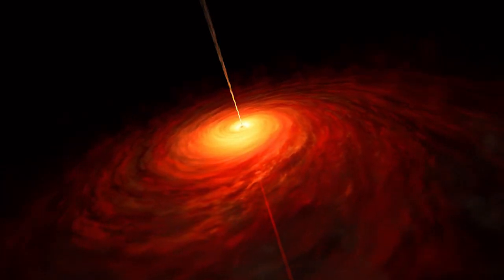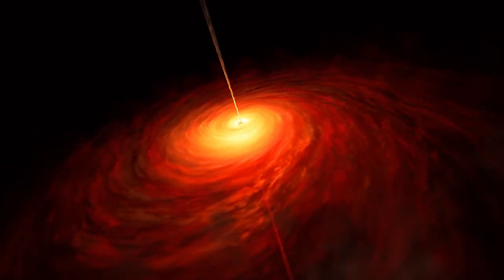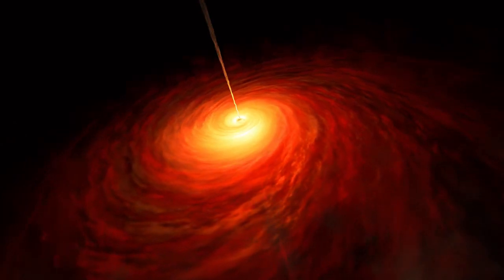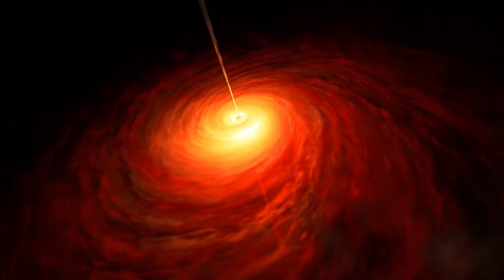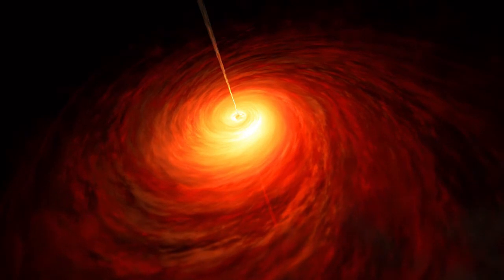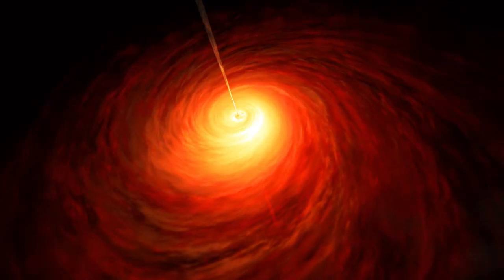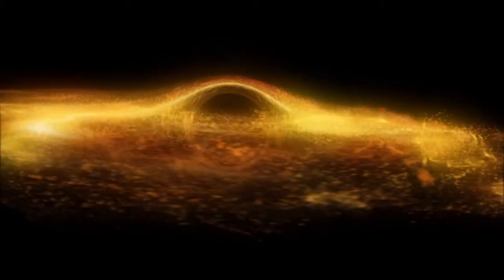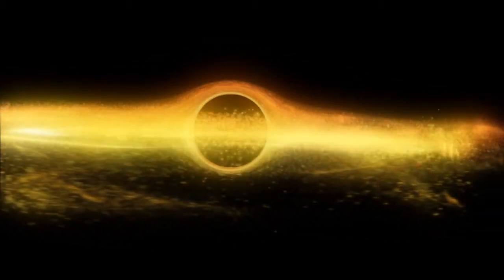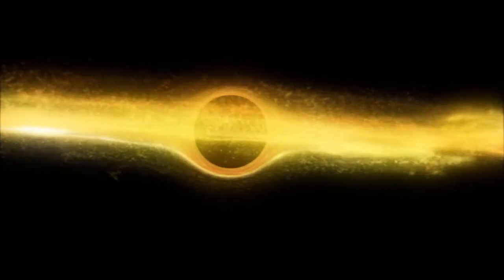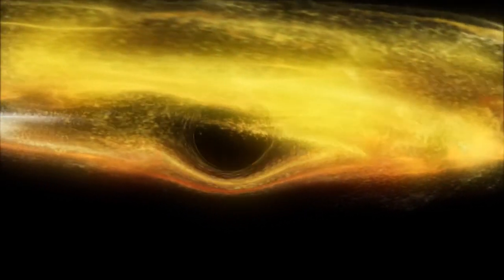Hubble has also lifted the veil surrounding the cosmic monsters that lurk at the centre of most galaxies: supermassive black holes. Using its spectroscopic observing capabilities, Hubble peered into the galaxy cores and found that the stars there moved in tight orbits at enormous velocities.